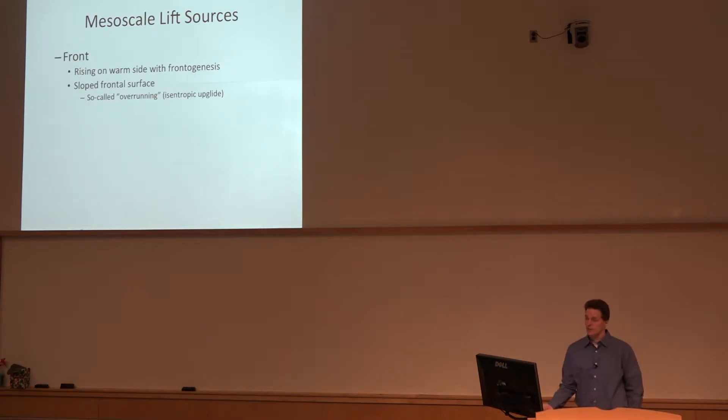We've seen examples with fronts, the circulation in response to frontogenesis rising around the warm side, and we have the sloped frontal surfaces where some people erroneously refer to it as overrunning, but it's really isentropic upglide or that's a fancy way of saying warm advection. You'll see warm advection sloping toward the cold side of the front with height, and that's also a portion of the QG omega equation which is warm advection.